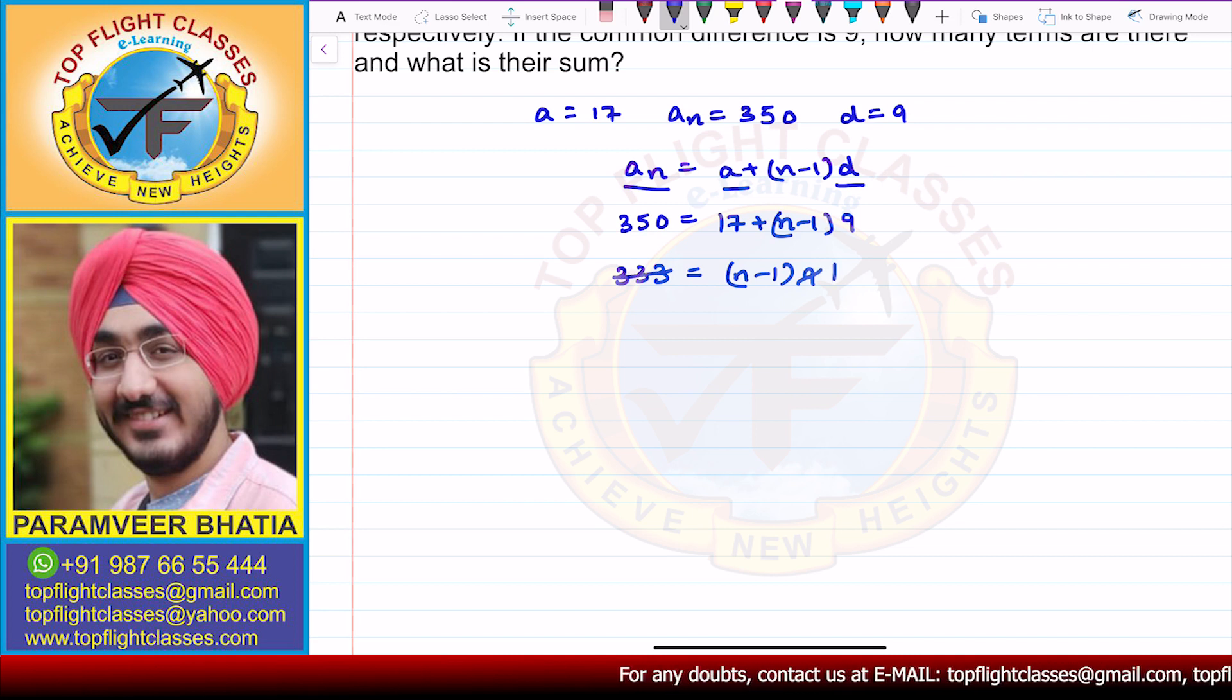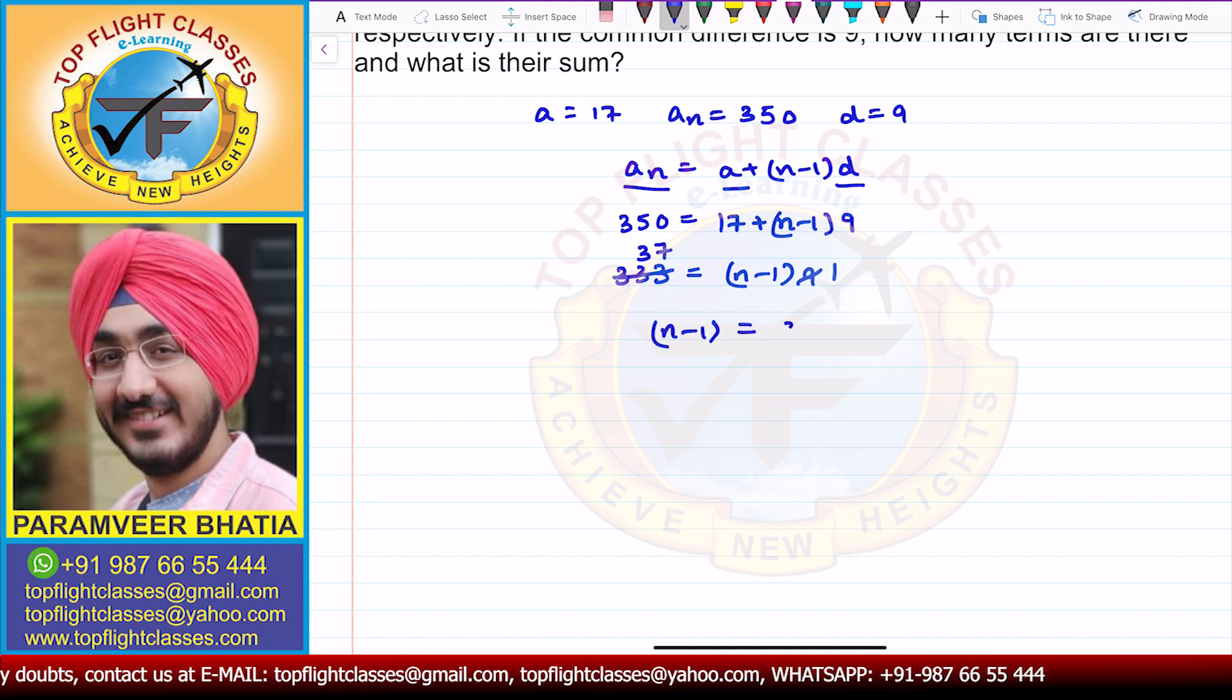So now 9 times 37 is... 9 ones are 9 and 9 threes are 27, we get 63. 63 is 9 into 7. So N minus 1 equals 37. So N comes out to be equal to 37 plus 1 which is 38.